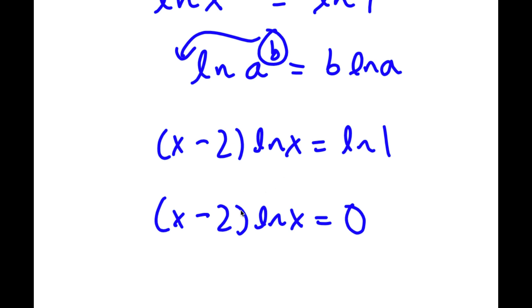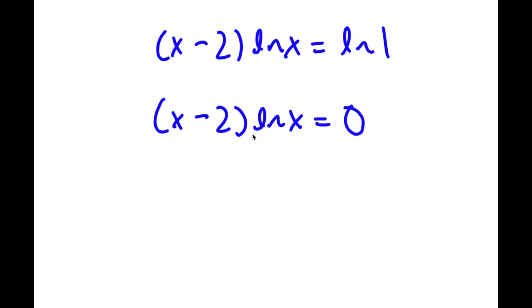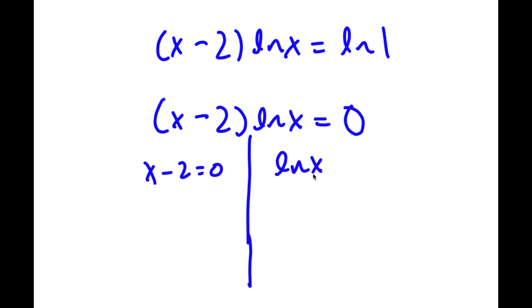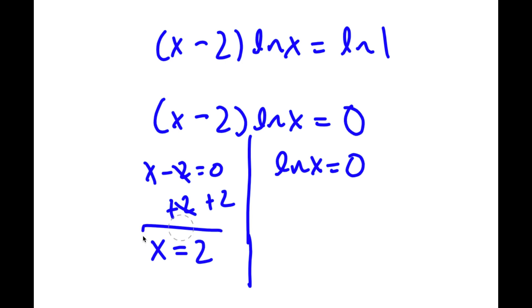This gives me two equations. I have x minus 2 is equal to 0, and I also have ln x is equal to 0. For x minus 2 equals 0, all I have to do is add 2 on both sides, and I get x is equal to 2. So this is one solution.